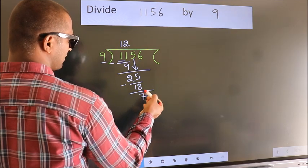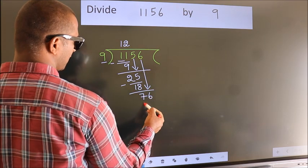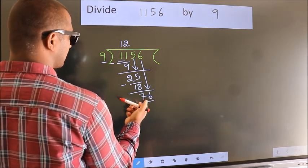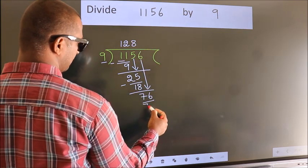After this, bring down the beside number. So 6 down. So 76. A number close to 76 in 9 table is 9 8s 72.